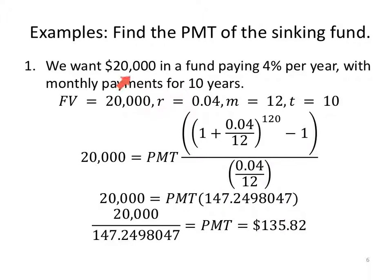If I want $20,000 in my child's education fund and I'm only going to be saving for 10 years, at 4%, if I pay in $135.82 monthly, then when they go to college, they could have $20,000. So they could buy a couple of books.